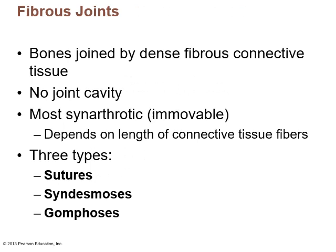Fibrous joints are where the bones are joined by dense fibrous connective tissue. There is no joint cavity and most are synarthrotic — immovable joints. It usually depends on the length of the connective tissue fibers that join the bones together. There are three types of fibrous joints: sutures, syndesmosis, and gomphoses.